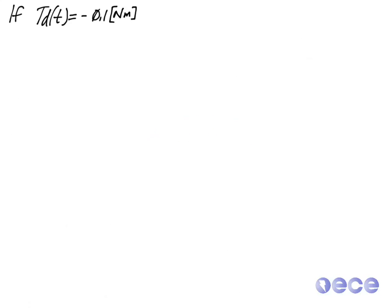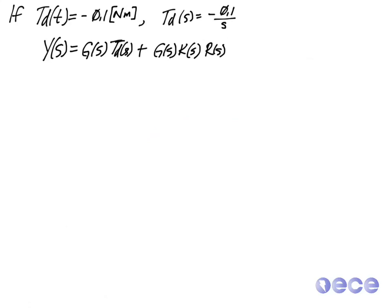So what if instead I choose that now I'd like to have a disturbance input of about minus 0.1 newton meters? So in the S domain, that's minus 0.1 over S. So remembering that the open loop transfer function is my disturbance TD times G of S plus G of S times K of S, my controller times R of S.